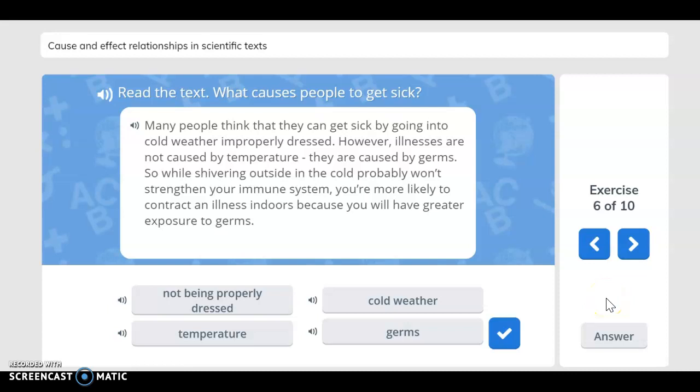Read the text. What causes people to get sick? People think that they can get sick by going into cold weather improperly dressed. However, the illnesses are not caused by temperature, they are caused by germs. So, while shivering outside in the cold probably won't strengthen your immune system, you are more likely to contract an illness indoors because you will have greater exposure to germs.